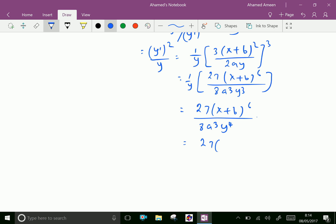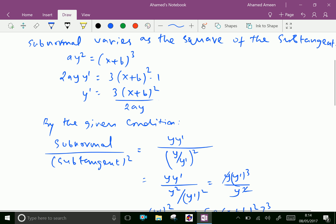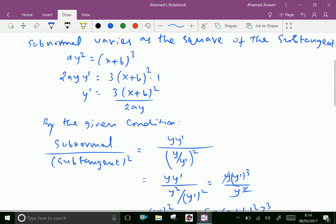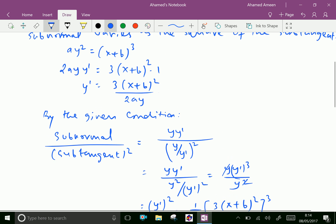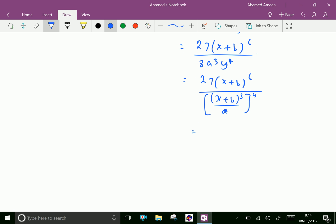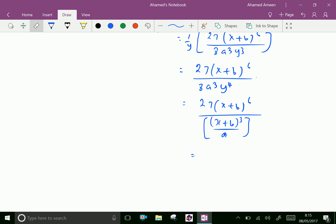From our original equation, we have y² = (x+b)³/a, so y⁴ = [(x+b)³/a]². Here (x+b)³ to the power 4. Now we can substitute this y⁴.